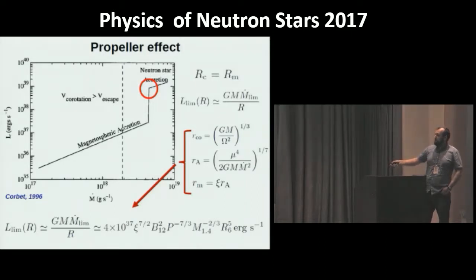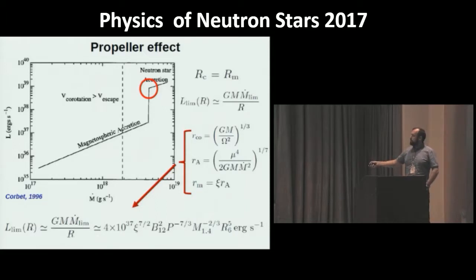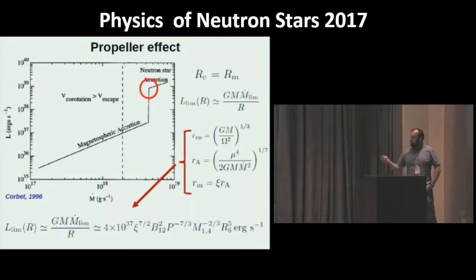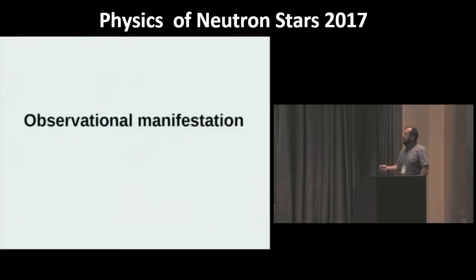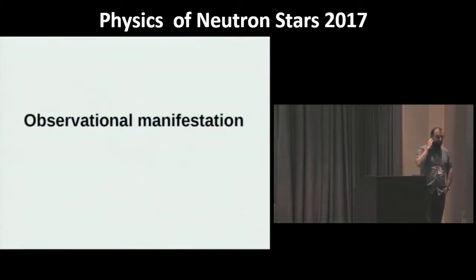Combining these equations gives a very useful expression for the limiting luminosity at the transition to the propeller effect. This limiting luminosity is a function of the fundamental parameters of the neutron star: its magnetic field strength and pulse period. The theoretical part is quite trivial.